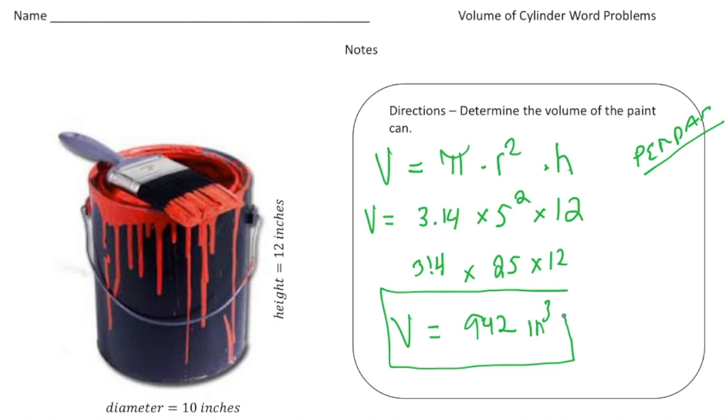So that is the capacity of the can to hold the paint. All right, so now you understand how to find the volume of a cylinder. Why don't you pause the video and try the your turn problem now, and when you're done you can see how you did. All right, good luck.